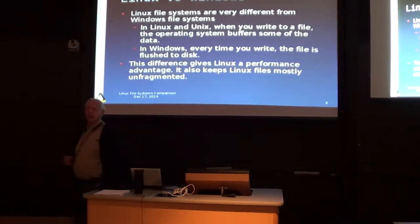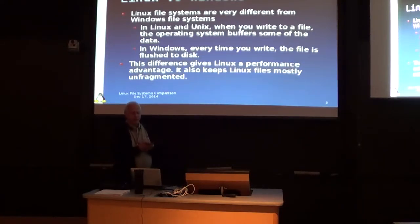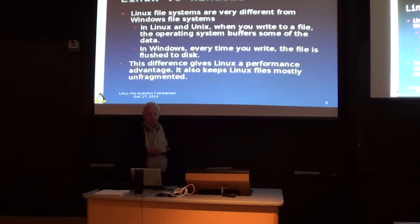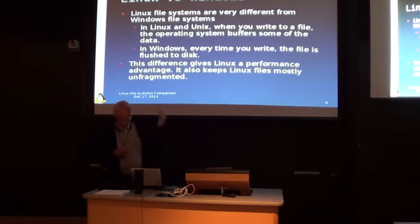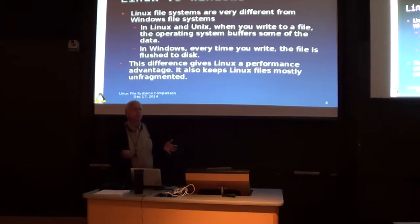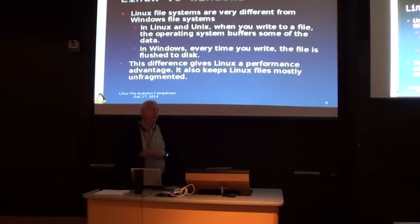I sometimes like to talk about Linux versus Windows — not that Linux is better than Windows — but the Linux file systems are very different from a Windows file system. In Linux and Unix, all file systems are derived from Unix UFS. When you read or write from a file, the operating system maintains a set of buffers that you're reading and writing into. At some point the OS flushes those buffers to disk. Files have a certain persistence — you can write a file and then delete it, and that file could never even actually be written to disk.